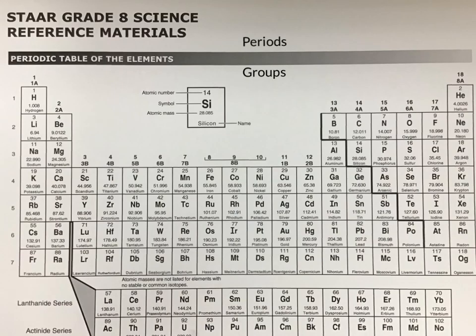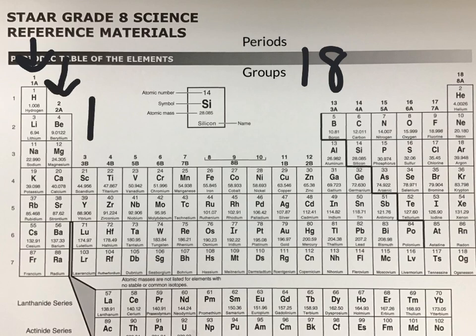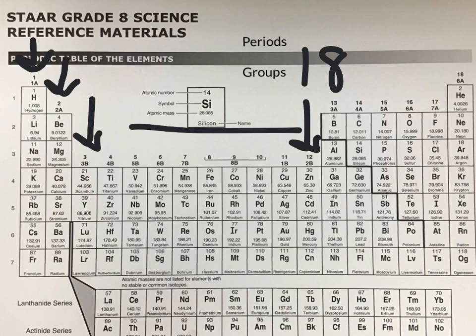Now we're going to look at groups. Again, there are 18 groups found in the periodic table. Group 1 contains hydrogen through francium. Group 2 has beryllium through radium. Groups 3 through 12 are going to be found on this part of the periodic table. You're not often going to encounter atoms from this area in 8th grade science, so we're generally going to skip groups 3 through 12.